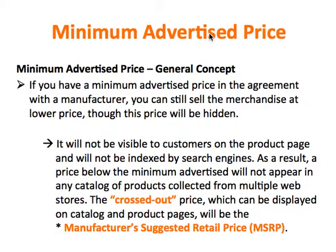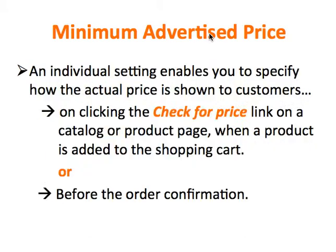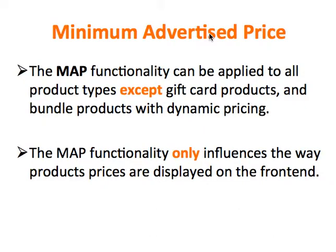The crossed-out price, which can be displayed on catalog and product pages, will be the manufacturer's suggested retail price, or in other words, the MSRP. An individual setting enables you to specify how the actual price is shown to customers — on clicking the Check for Price link on a catalog or product page, when a product is added to the shopping cart, or before the order confirmation. The MAP functionality can be applied to all product types except gift card products and bundle products with dynamic pricing. The MAP functionality only influences the way product prices are displayed on the front end.